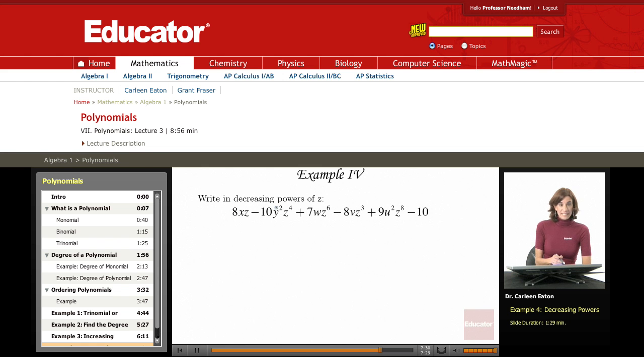Now I'm going to write this in decreasing powers of z. So I'm focusing only on the z's when I figure out which order to put these different monomials in to write out the polynomial.